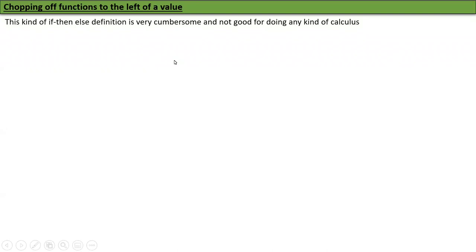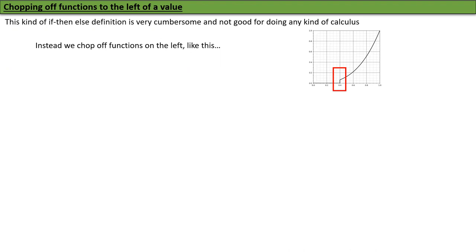We are now going to look at how to chop off functions to the left of a value. The if-then-else type of definition is very cumbersome — it's not good for calculus and not good for programming. Instead, we have a systematic way to chop off functions to the left: anything to the left of the cutoff is set to zero. Then we can add and subtract chopped-off functions to get all kinds of results.